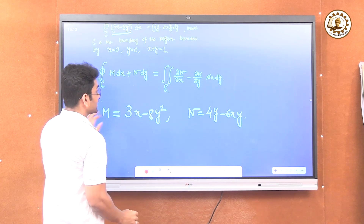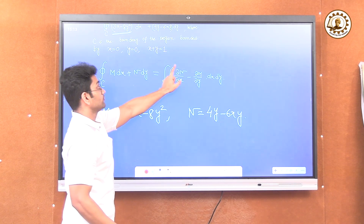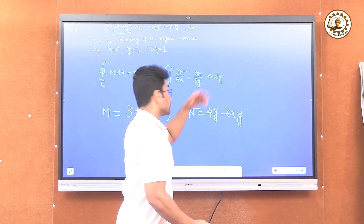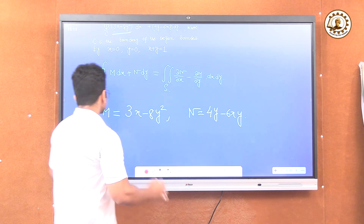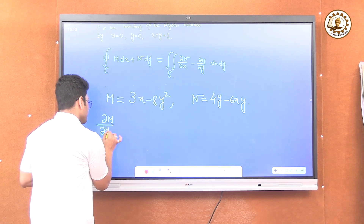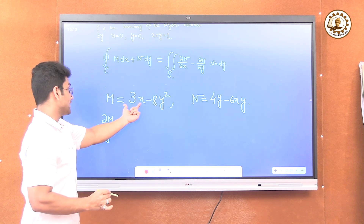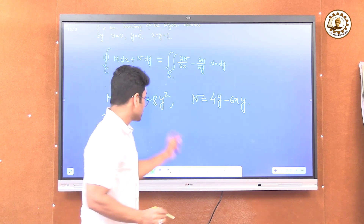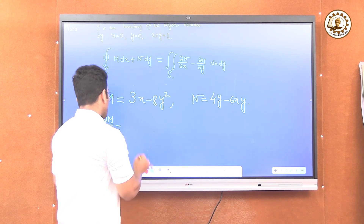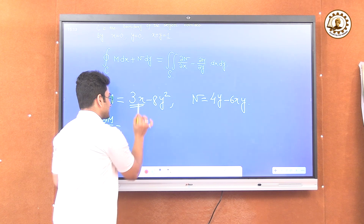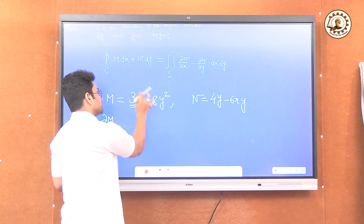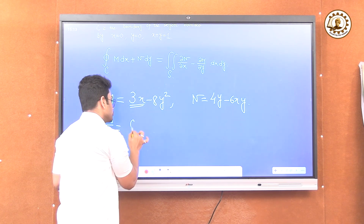Now I have to take the partial derivative of M with respect to x and the partial derivative of M with respect to y. So del M / del y: take the derivative of 3x with respect to y — in the term 3x there is no y, so the partial derivative of 3x with respect to y equals zero.